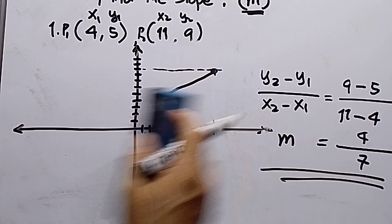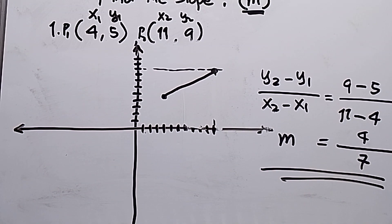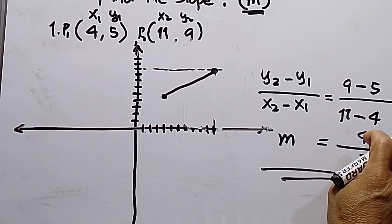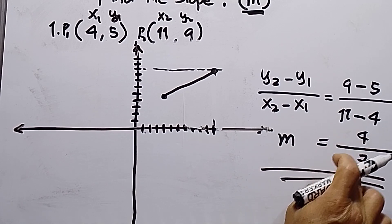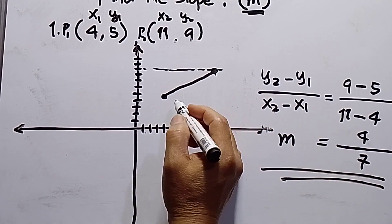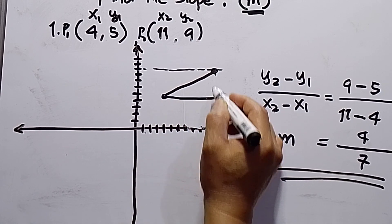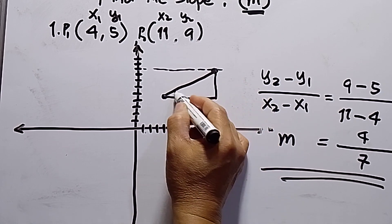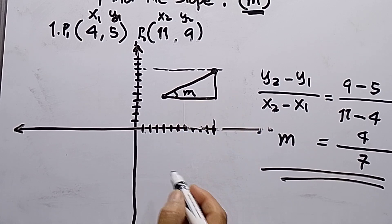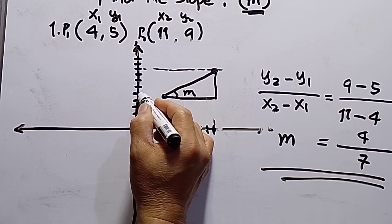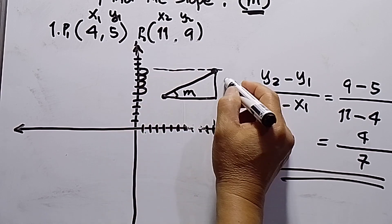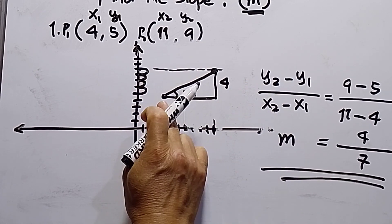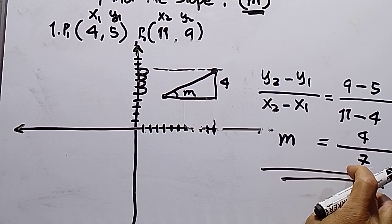Then, how do I get 4 over 7? So rise is 4. Because slope is equals to rise over run. So meaning, this will be 4. Let us check. So this is M. So 1, 2, 3, 4. Correct. This is 4. Then take note,